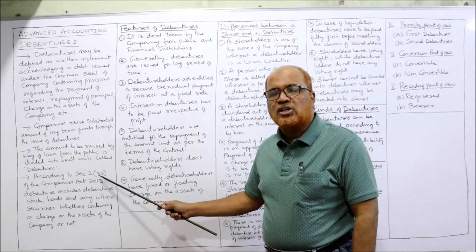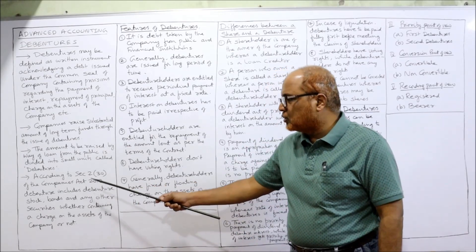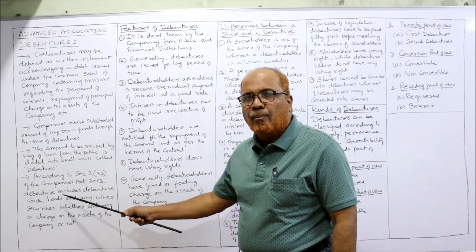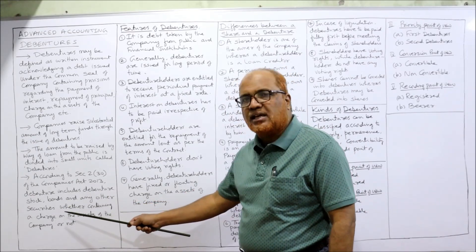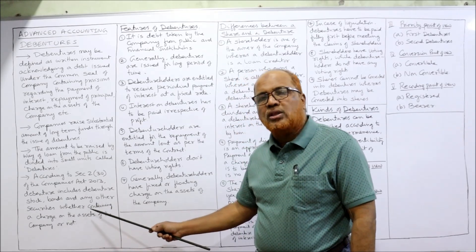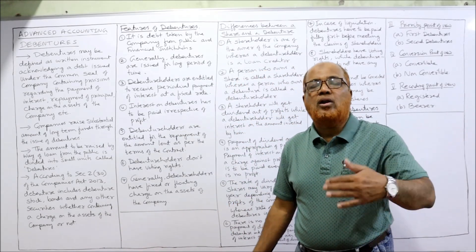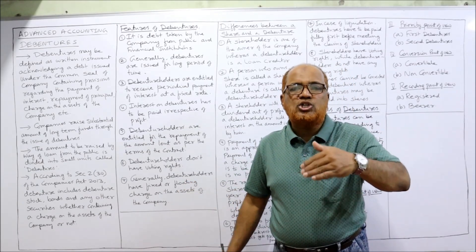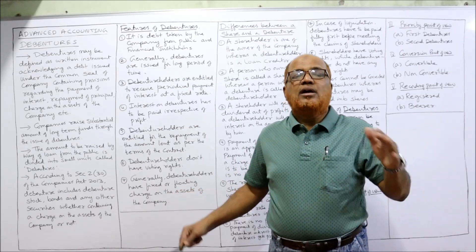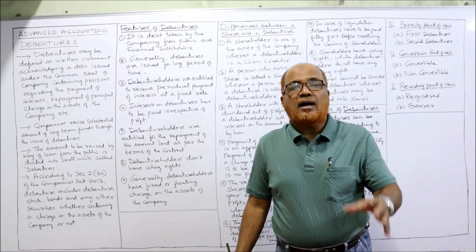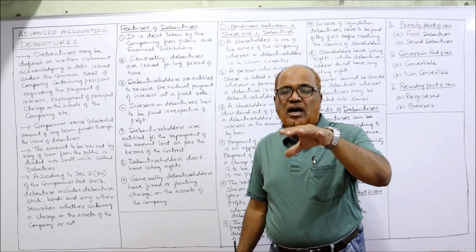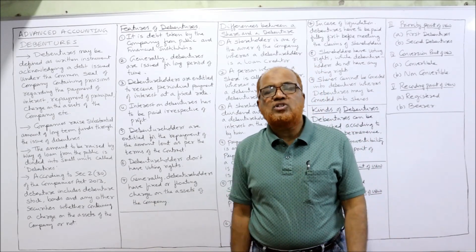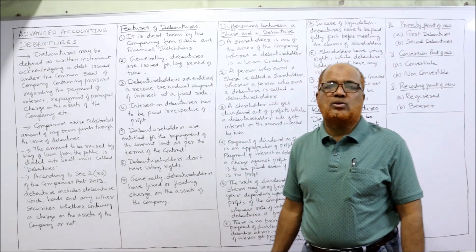According to Section 2, subsection 30 of the Companies Act 2013, debentures includes debenture stock, bonds, or any other security, whether containing a charge on the assets of the company or not. That means whatever bonds or debenture stock issued by the company, or any other security issued by the company, containing the provision of a charge on assets or not, falls under this definition.